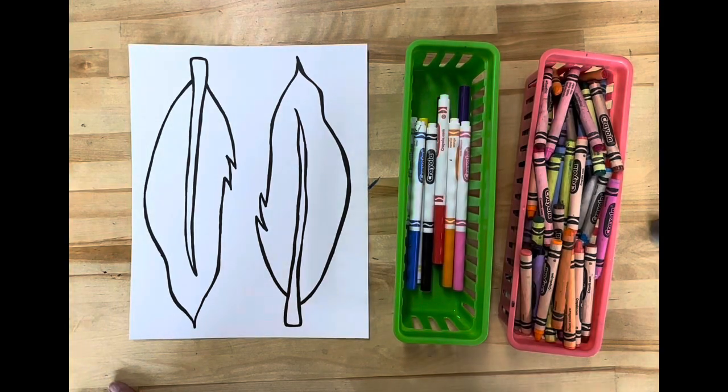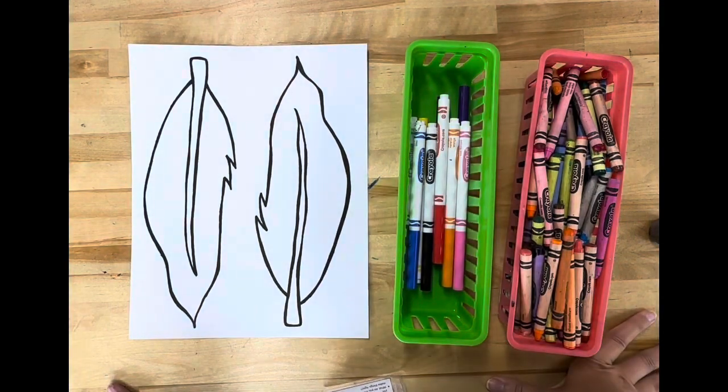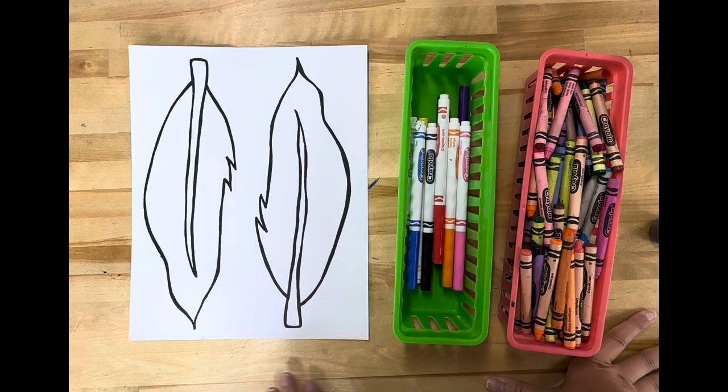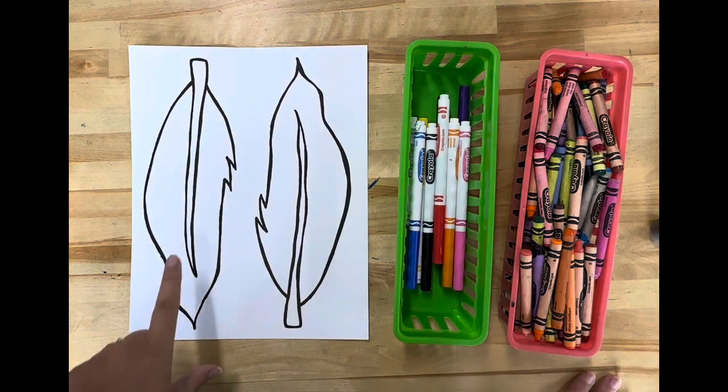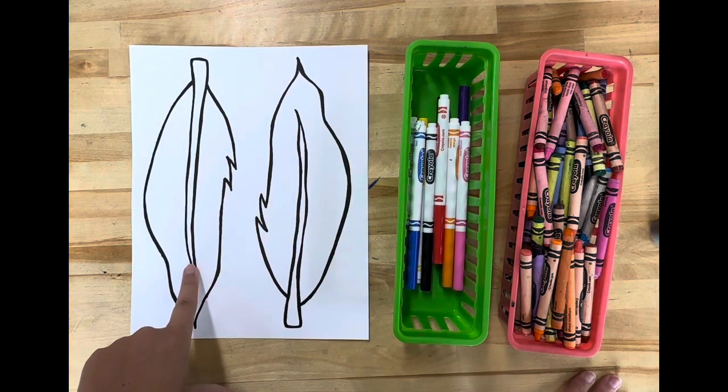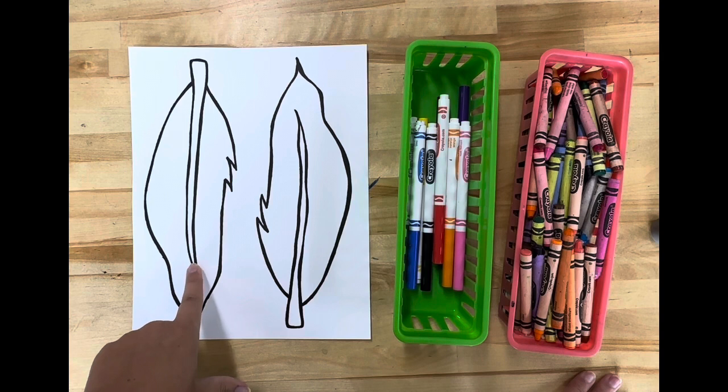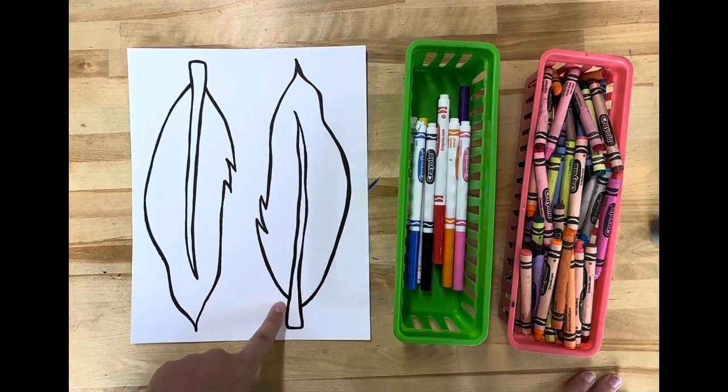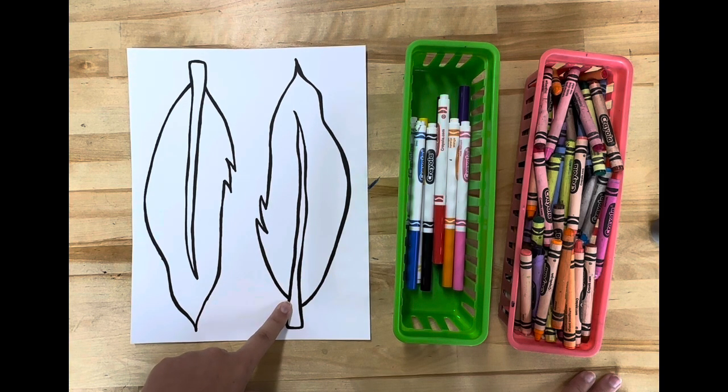Hello artists. Today we will be decorating our feathers to create our Kelsey Montague mural. You have a sheet with two feathers on it. One feather is for me to put in the mural so the whole school can see it. The second feather is for you to take home.